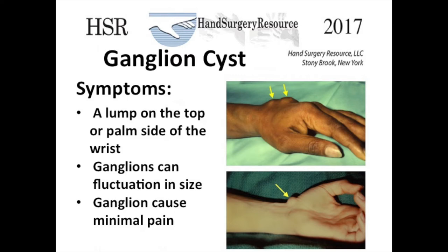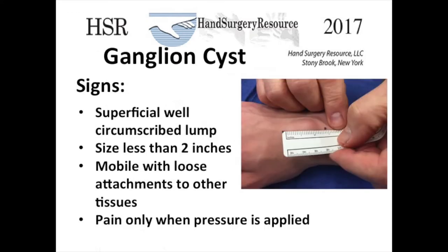Pain is usually minimal. Extreme wrist motion and/or vigorous palpation can cause some ganglion tenderness. On examination, the cyst has a well-defined smooth surface. The cyst is loosely attached to the surrounding tissues and is minimally tender on direct palpation.